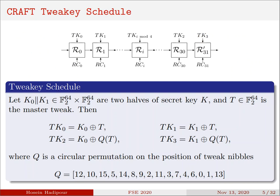Round tweakeys of CRAFT are produced using a simple tweak schedule. The tweak schedule of CRAFT splits the 128-bit key into two 64-bit keys k0 and k1. Then, together with the 64-bit master tweak t, it generates four tweak keys according to these relations, where Q is a permutation on the position of tweak nibbles. Then, starting from TK0, CRAFT uses these four tweak keys periodically.